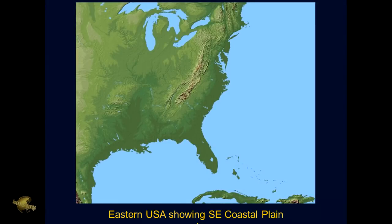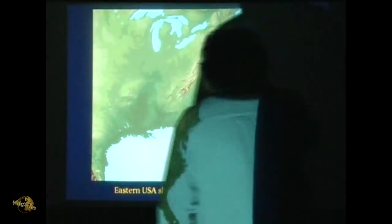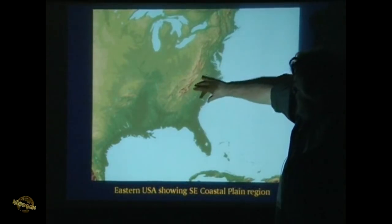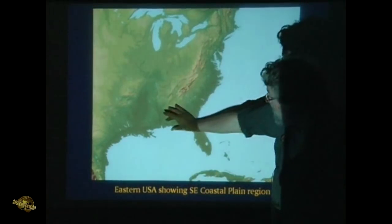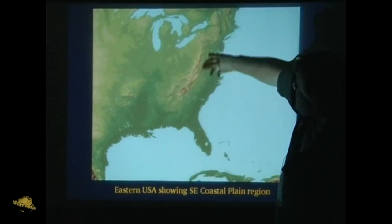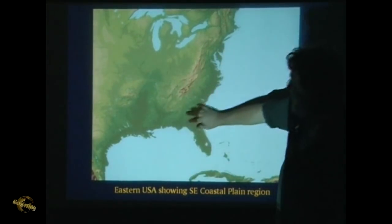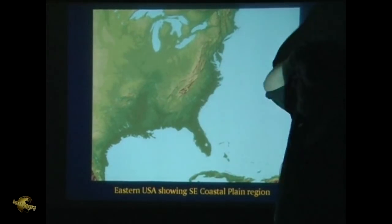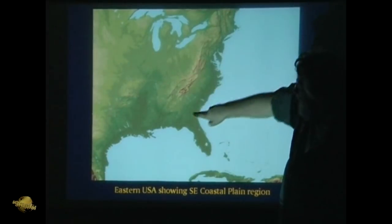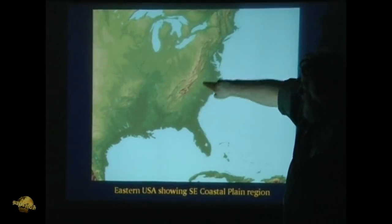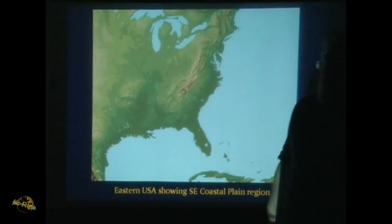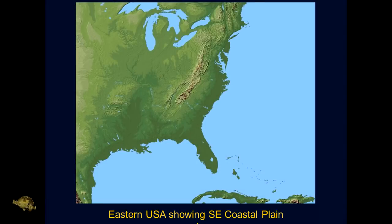Here we're looking at the region of the Carolina Bays. When we talk about the coastal plain region, it's this dark strip right here. That's the coastal plain, and this is where they're found, all along in this area. As you get into the upper, higher levels, the ground gets a lot rockier and harder, and they disappear.